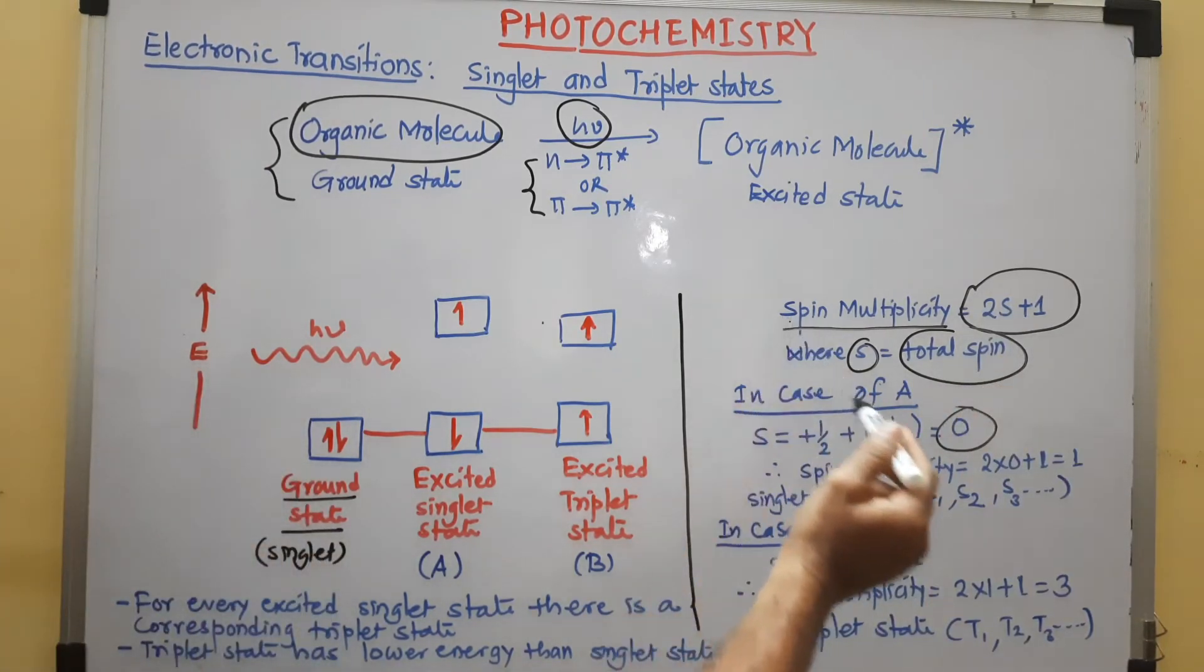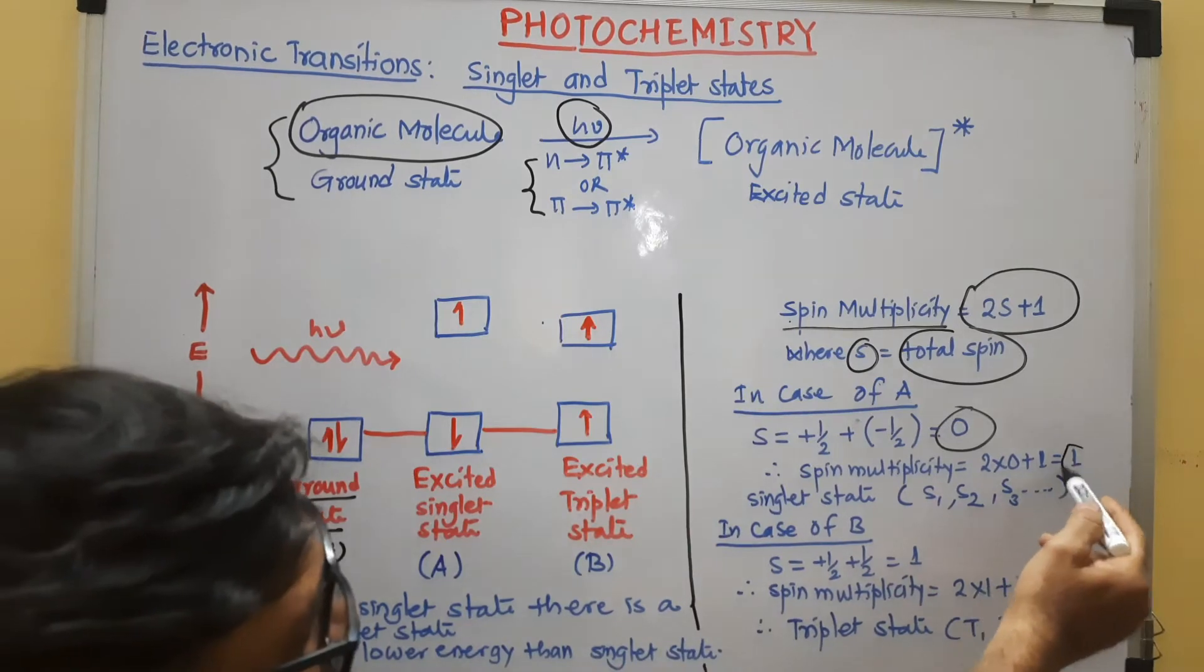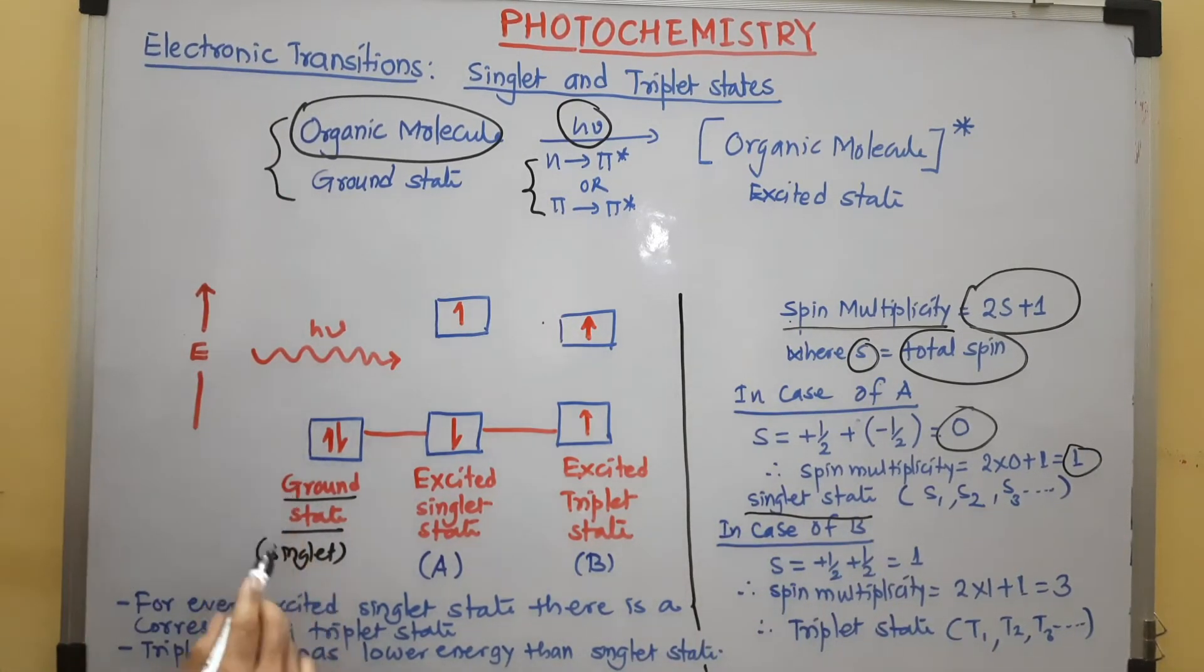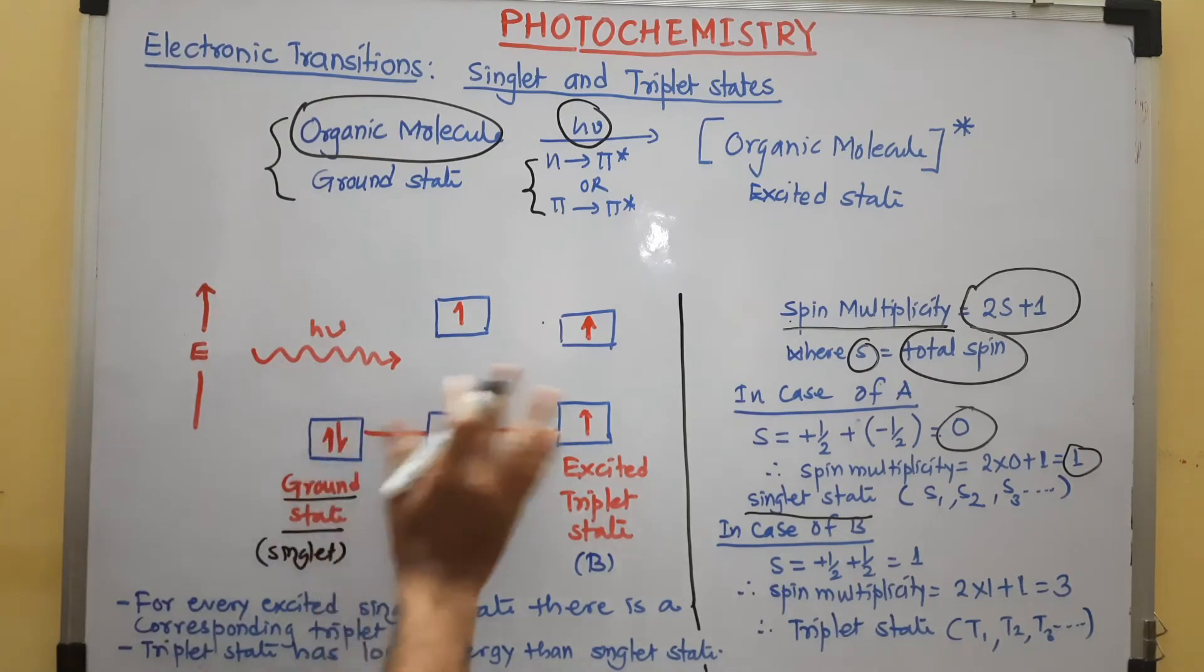Because of that 1, we call it as a singlet state. So, this is a singlet ground state. When light energy is absorbed, one electron is excited in the excited state. So, there are two possibilities.